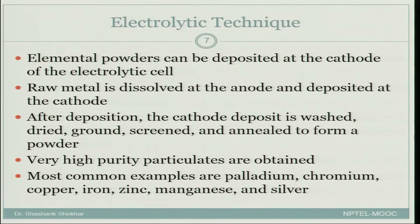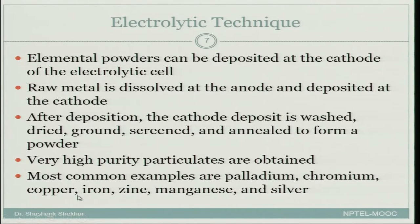In this method you are able to get very high purity material because, depending on the voltage used, only that particular element will be dissolved and then travel through the electrolyte to get deposited onto the cathode. Most common examples are palladium, chromium, copper, iron, zinc, manganese, and silver. This technique is much more useful for metals, particularly if you want high purity metals.